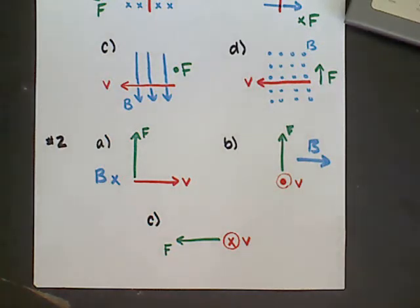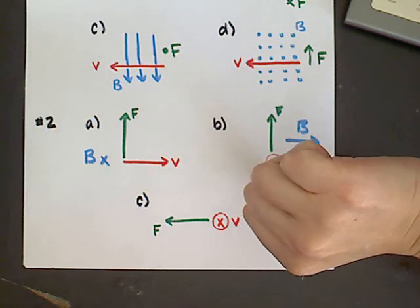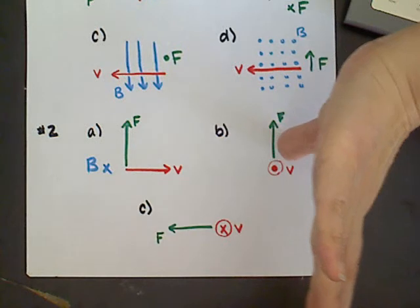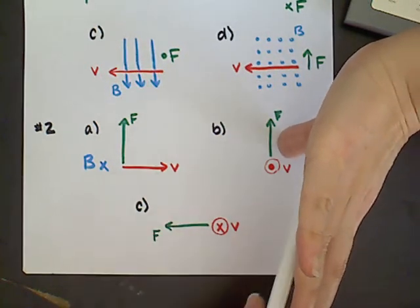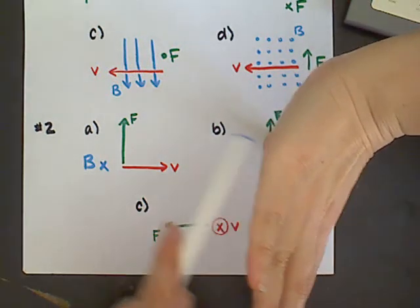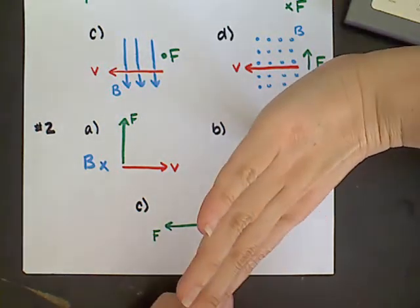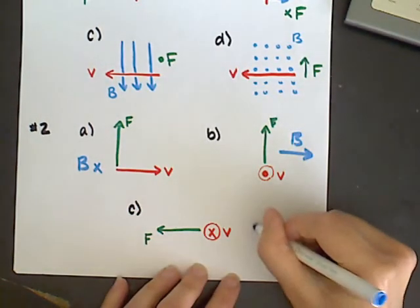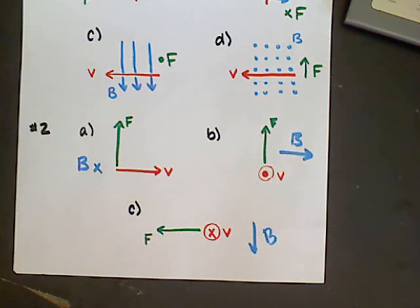The last one — here's a doozy. My velocity is directed into the page, so I put my thumb going down into the page. My force is directed to the left, which means I need to position my hand so my palm is facing toward the left part of the page. When I do that — thumb into the page, palm facing left — my fingers have to be pointing downward, so the direction of my magnetic field must be pointing downward.